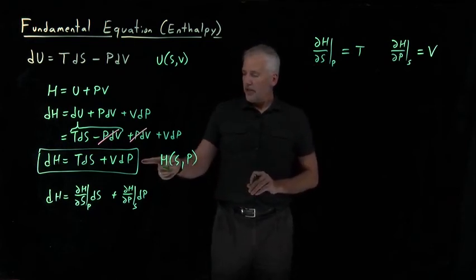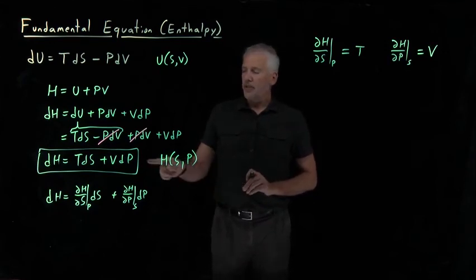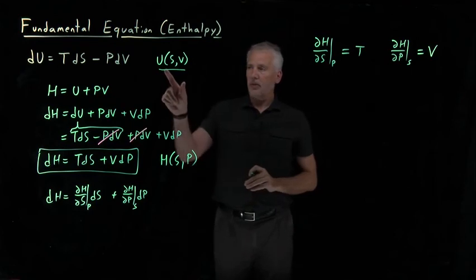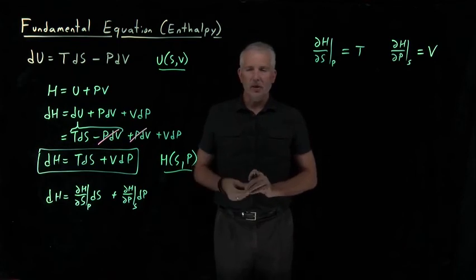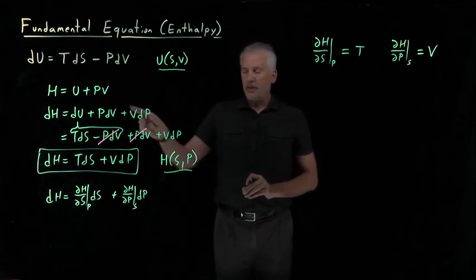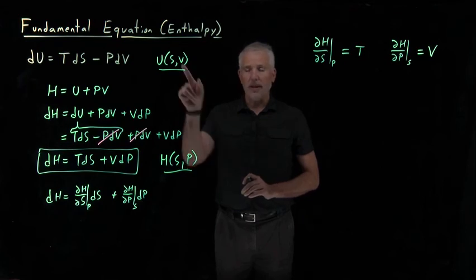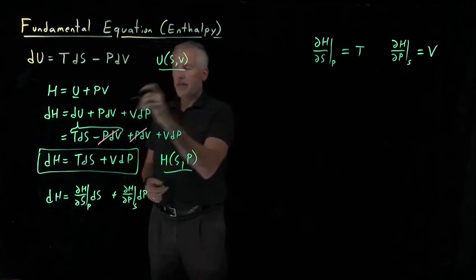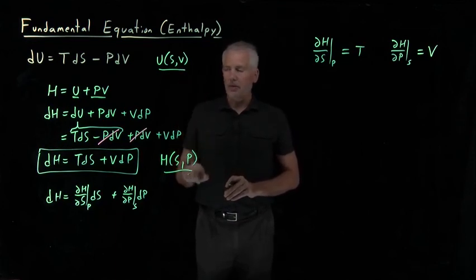The other important thing about this fundamental equation for the enthalpy is that we've succeeded in turning the internal energy, which is a natural function of S and V, into the enthalpy, which is a natural function of S and P. It's perhaps not surprising, since enthalpy is the property we use at constant pressure, that its natural variables include the pressure rather than the volume. Adding the pV product has managed to switch the natural variable from V to P.